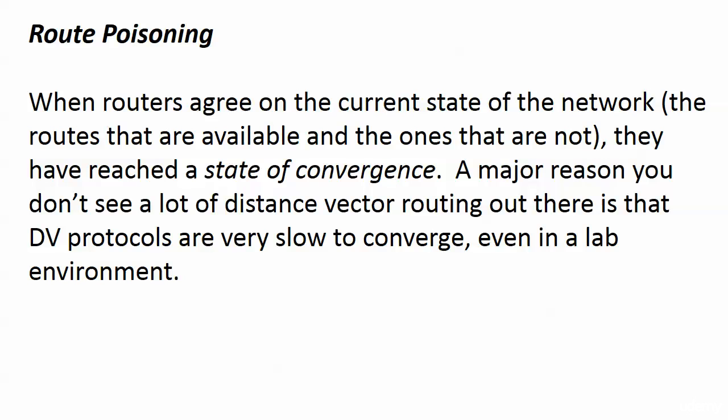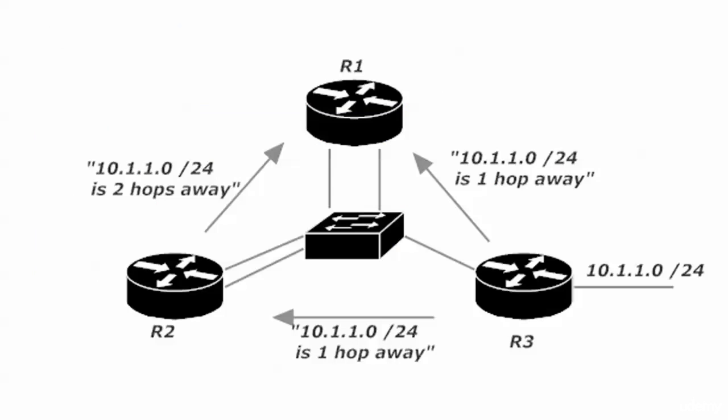Let's see what could be so positive about something that has such a nasty name — route poisoning. Here's an example of a distance vector protocol walkthrough. Router 3 is connected to 10.1.1.0/24, and it's advertising to routers 1 and 2 that that network is one hop away.